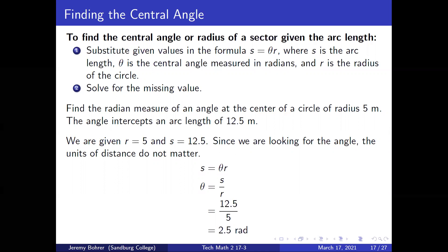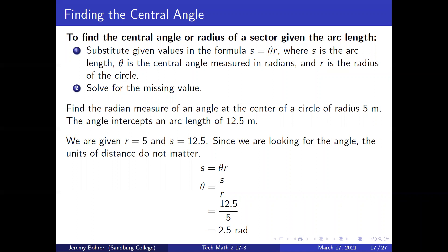Find the radian measure of an angle at the center of a circle of radius five meters. The angle intercepts an arc length of 12.5 meters. We are given r equals five and s equals 12.5. Since we are looking for the angle, the units of distance do not matter. s equals theta r, so theta equals s divided by r, which is 12.5 divided by five, which is equal to 2.5 radians.